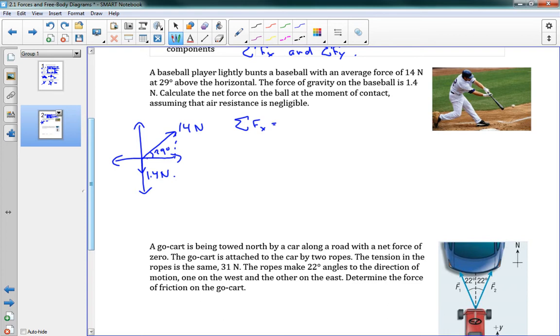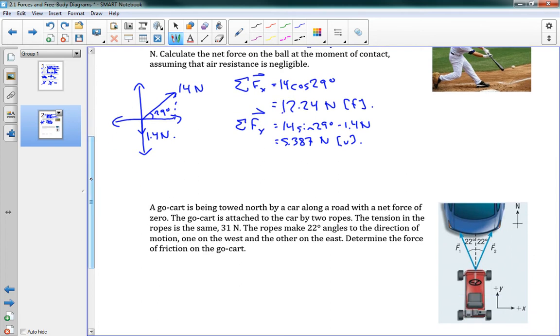So now we want to find the net X force. Well, you can see from this picture that the second one doesn't have any X component. It's straight down in the Y dimension. So the sum of the X forces is just going to be 14 newtons times the cosine of 29 degrees. And that gives us 12.24 newtons in the forward direction. Good. And then we do the same thing with Y. So we can see that now we do have two pieces. So we're going to have 14 sine 29 degrees minus 1.4 newtons. And this gives us 5.387 newtons in the up direction. So these are the forces acting. fx, fy.